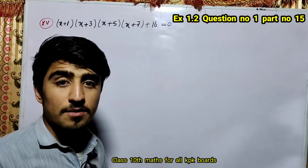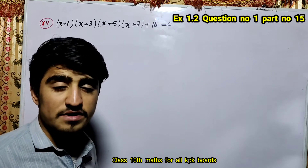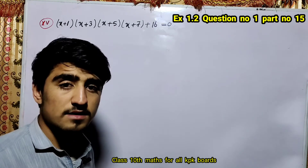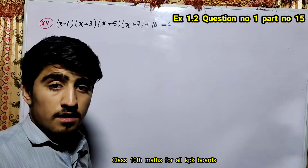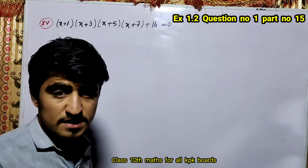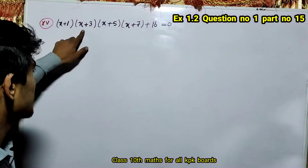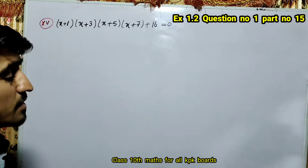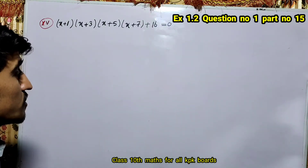Assalamu alaikum my dear students. Today we are going to do exercise 1.2, question number 1, part number 15. The equation is: (x+1)(x+3)(x+5)(x+7) + 16 is equal to 0.